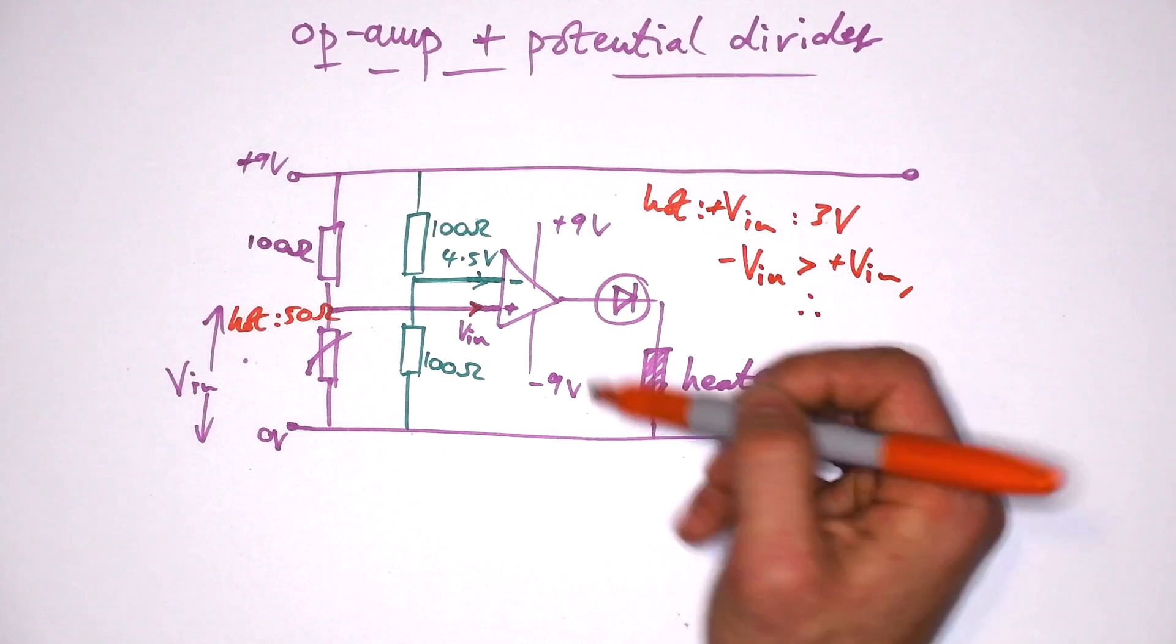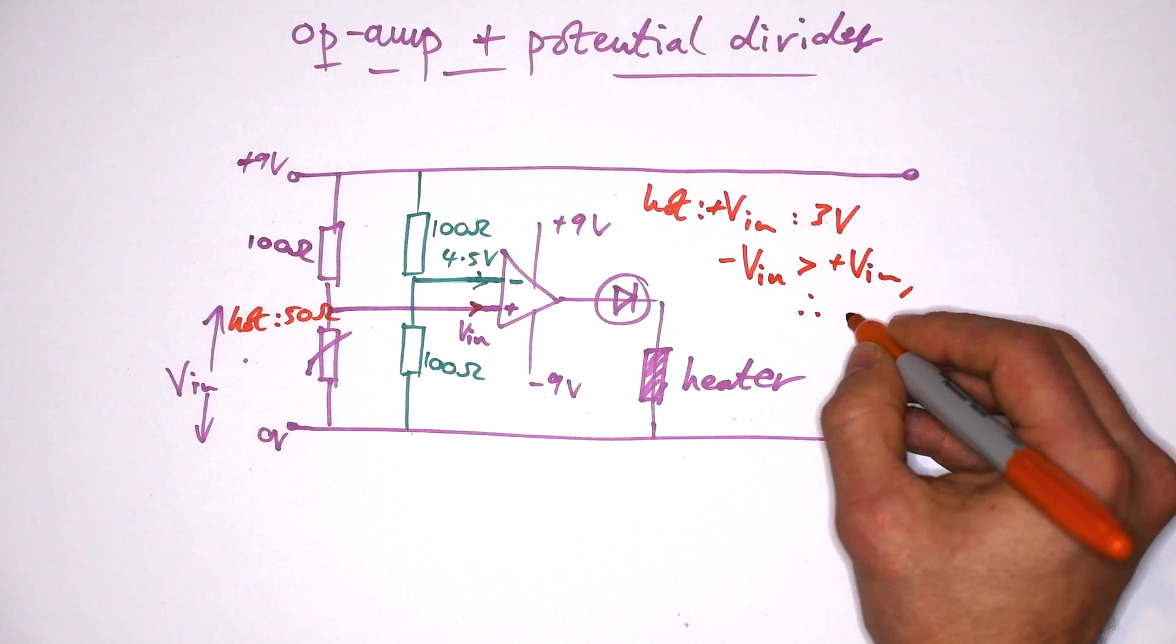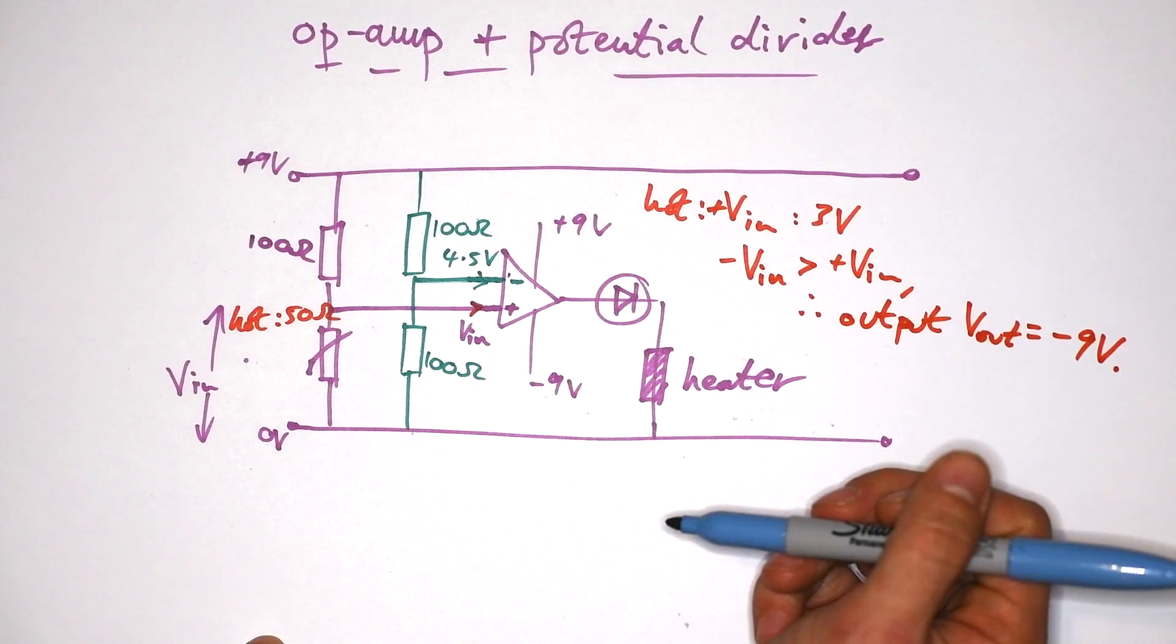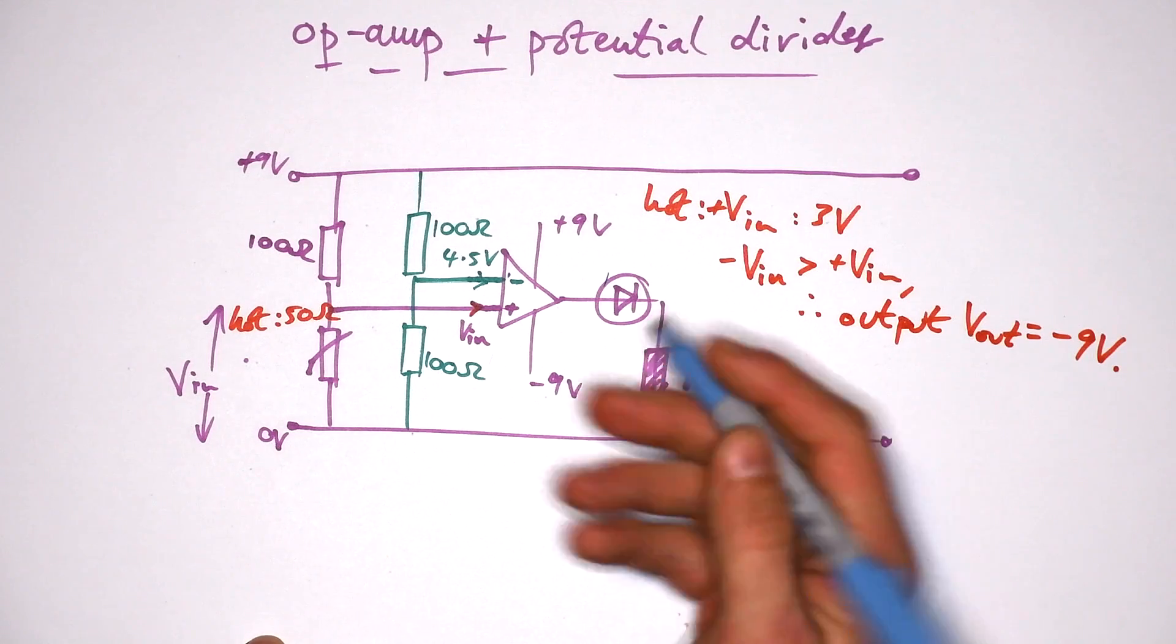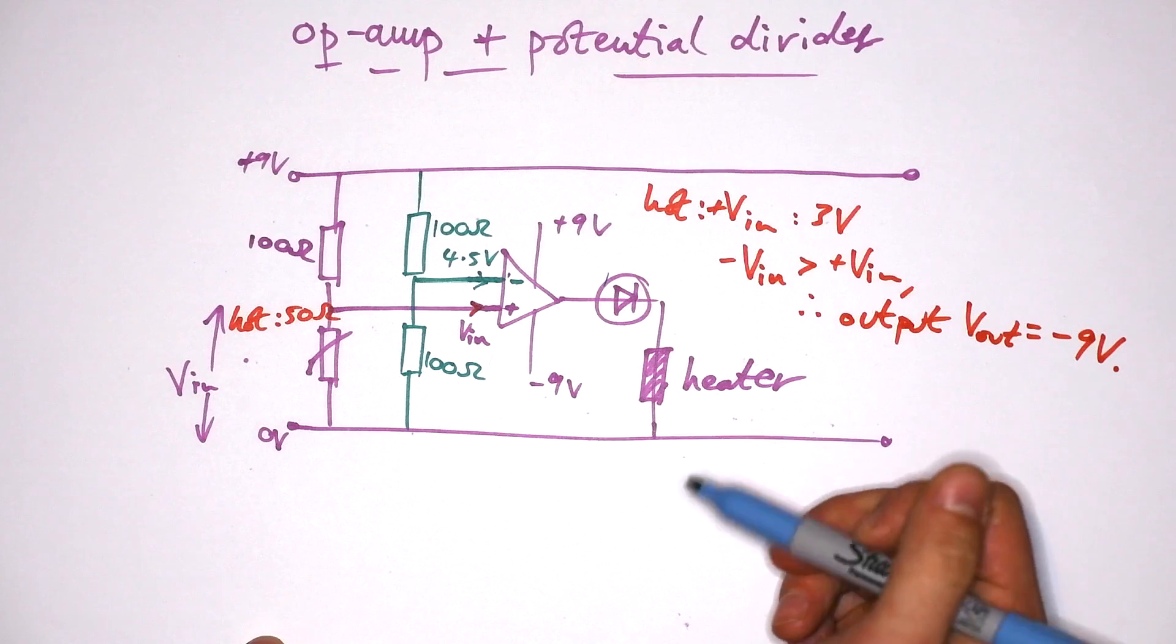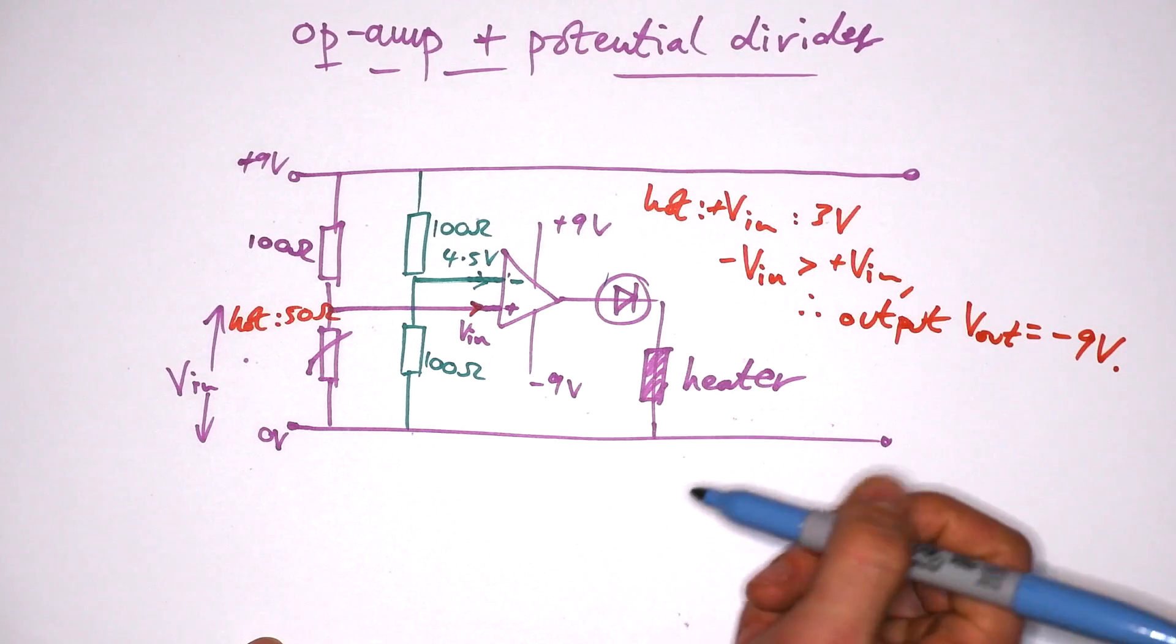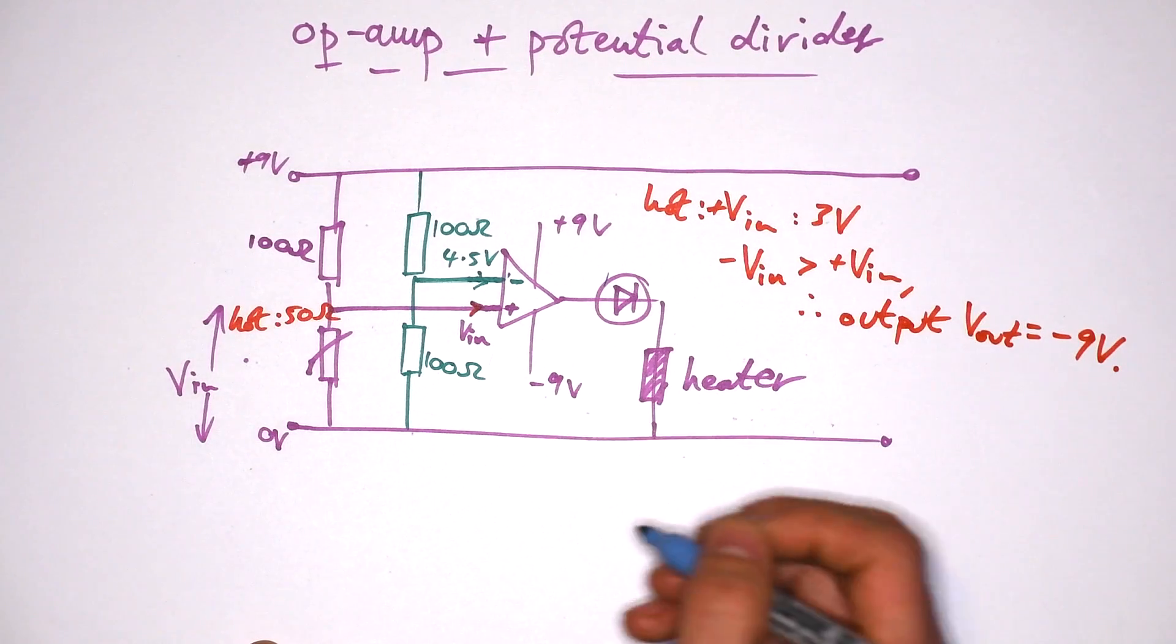Then that means that the negative V in is greater than our positive V in. Therefore, we're not going to have plus 9 volts. We're going to have minus 9 volts. Like we said, the difference is going to be minus 1.5, but because the amplification factor is huge, then that means that it's going to be saturated, but in a negative direction. So we have that minus 9 volts coming out.